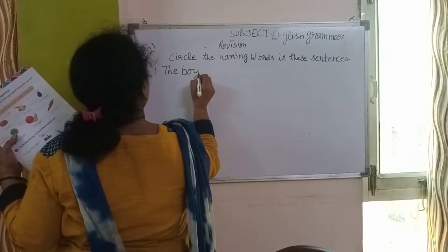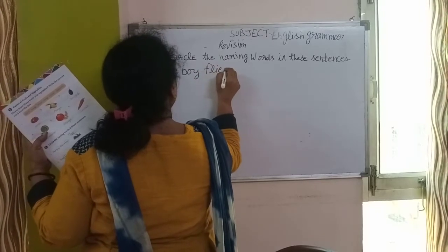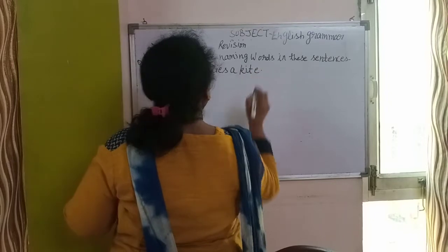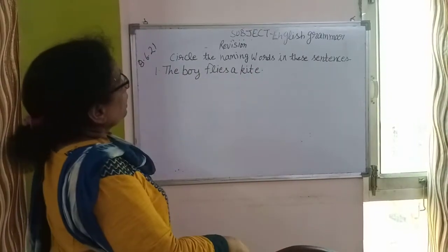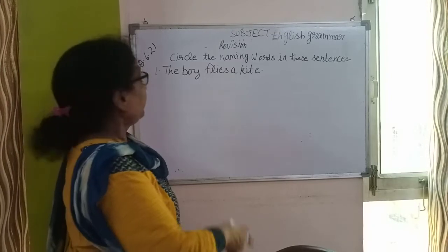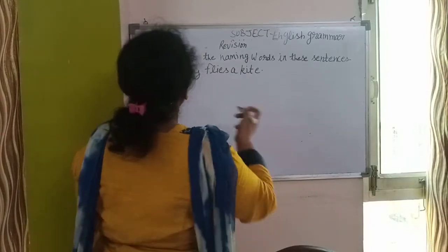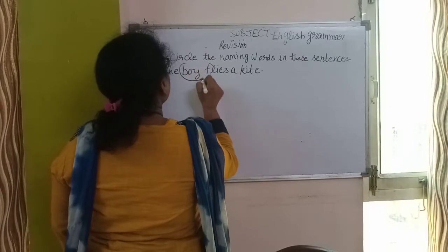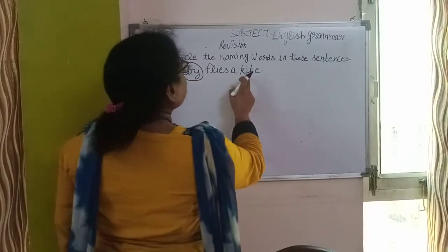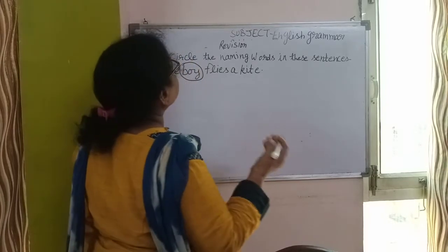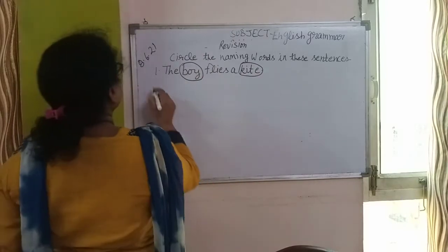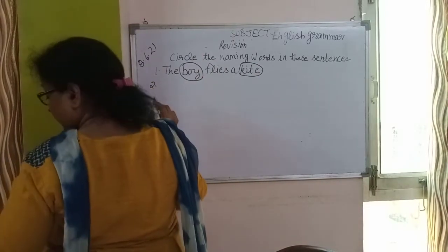The boy flies a kite. तो अब हमें इसमें कौन कौन से words naming words हैं? The boy है, क्योंकि वो एक लड़का है, इसको हम circle करेंगे. And kite है — kite एक thing है, इसको भी हम circle कर देंगे. यह हमारे इसमें naming words हैं.